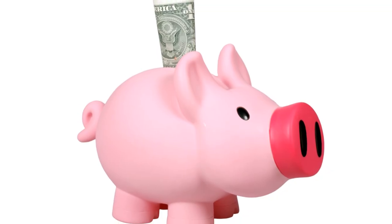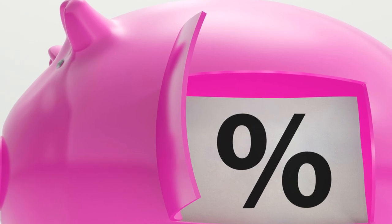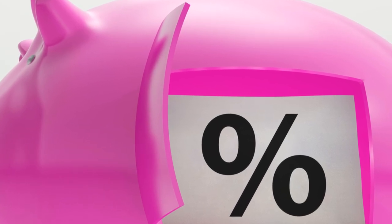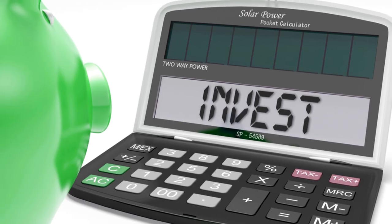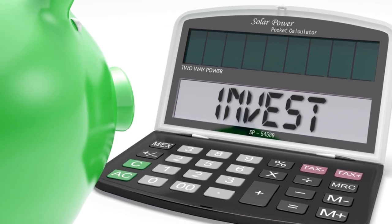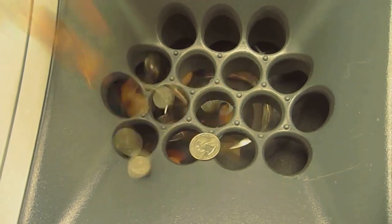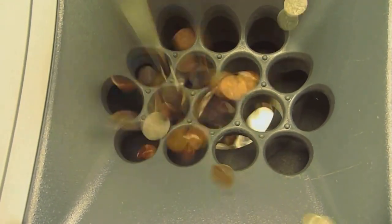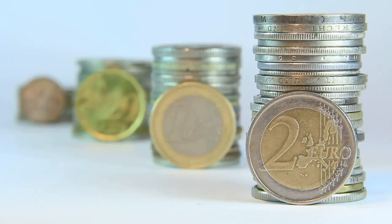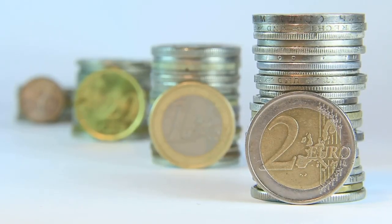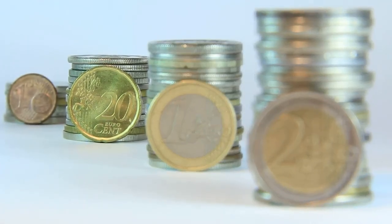A high-yield savings account, as the name suggests, is a type of savings account that offers a higher interest rate compared to a traditional savings account. What makes it appealing is its safety — your money is insured up to a certain limit, so even if the bank goes under, your funds are protected. The returns are fixed, so you know exactly how much you'll earn at the end of a given period, thanks to the specified interest rate. This makes it a predictable and reliable source of income, especially for those who prefer stability over high-risk ventures.